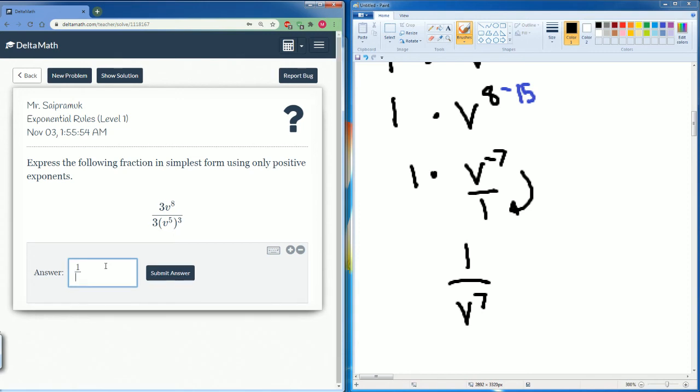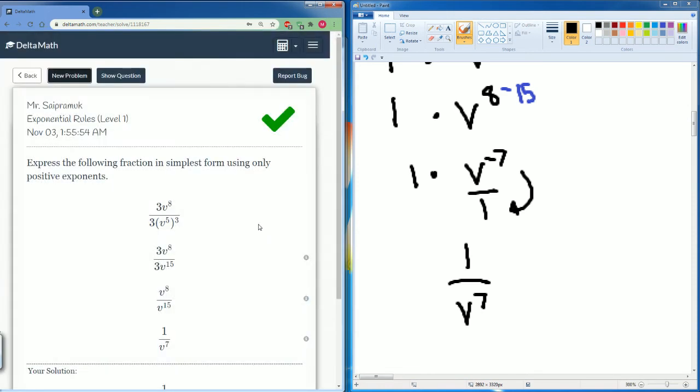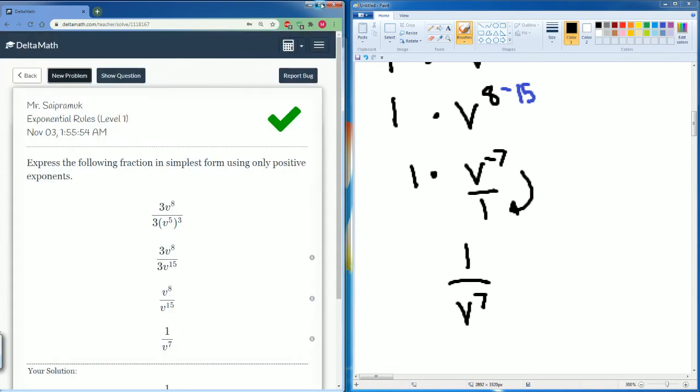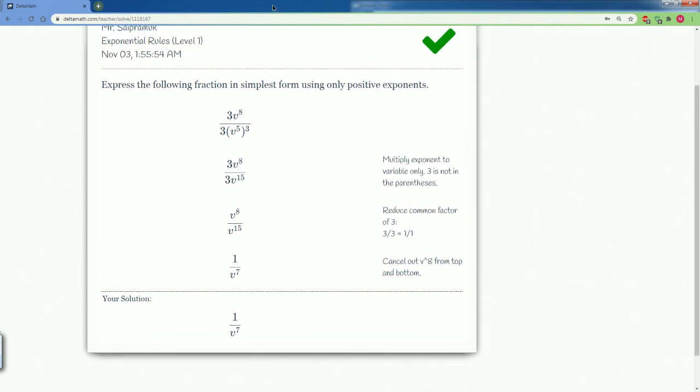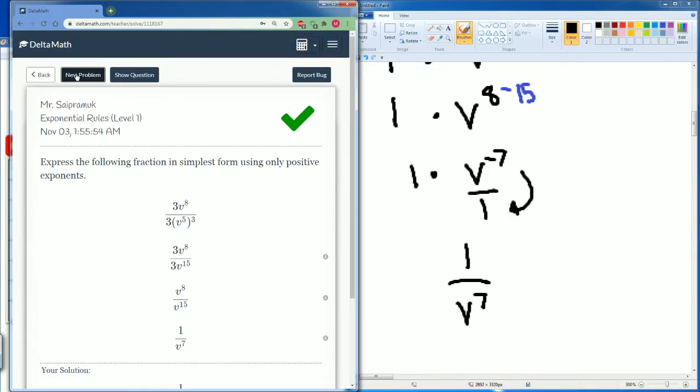1 divided by v to the seventh power. There you go. And here are all the steps. Let's do one more problem.